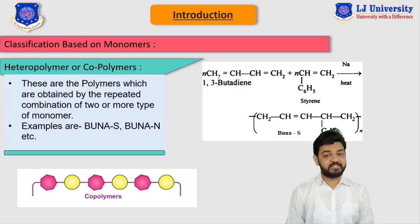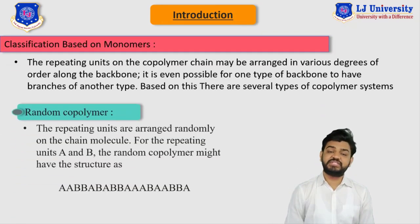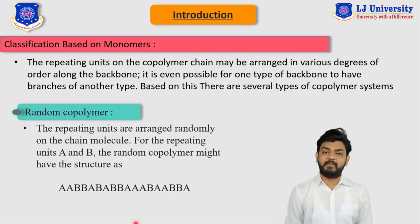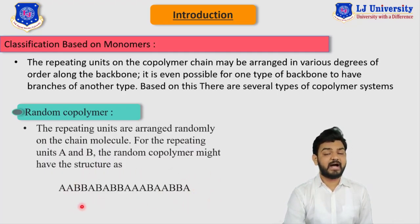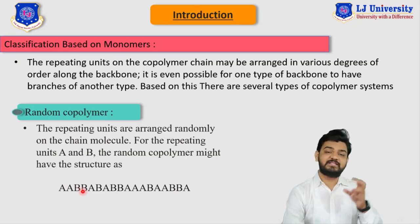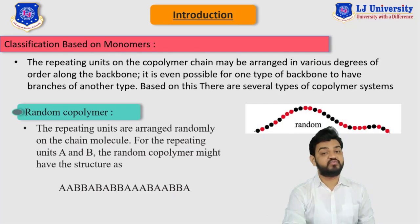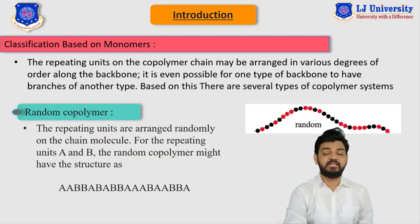This is not the end of the story — we have further classification based on the monomer as random polymer, alternative polymer, and block polymer. A random polymer is one where the repeating units are arranged in a random manner on the chain of the molecule. For repeating units A and B, the random copolymer might have a structure like AABB and so on in a completely random arrangement. Here in the image, the red marble is one monomer and the black marble is another — they are arranged in a completely random manner, so this is the random copolymer.